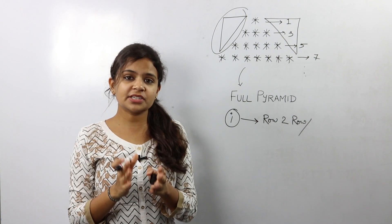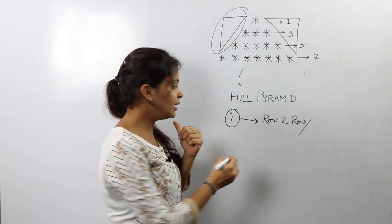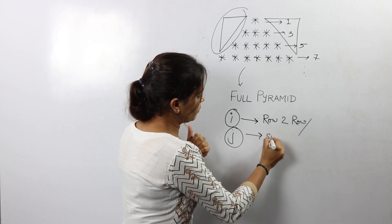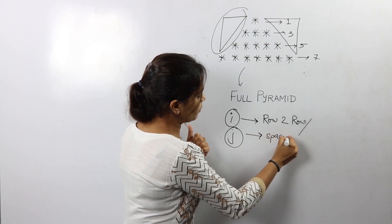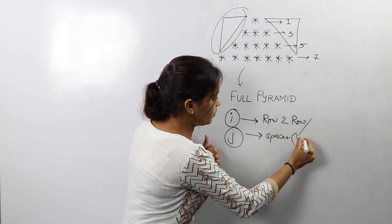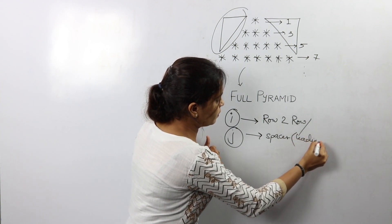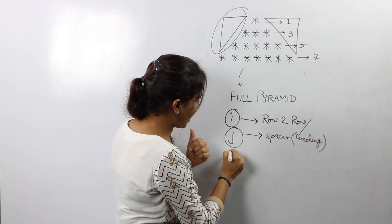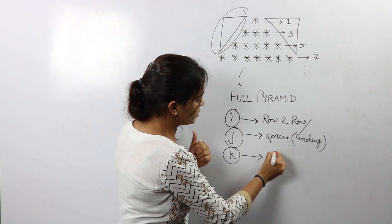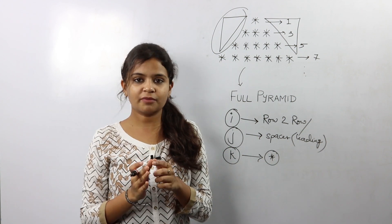And the jth loop to print the spaces in every single row. So again here we would be printing the leading spaces. And the kth loop to print the required number of stars in every single row.